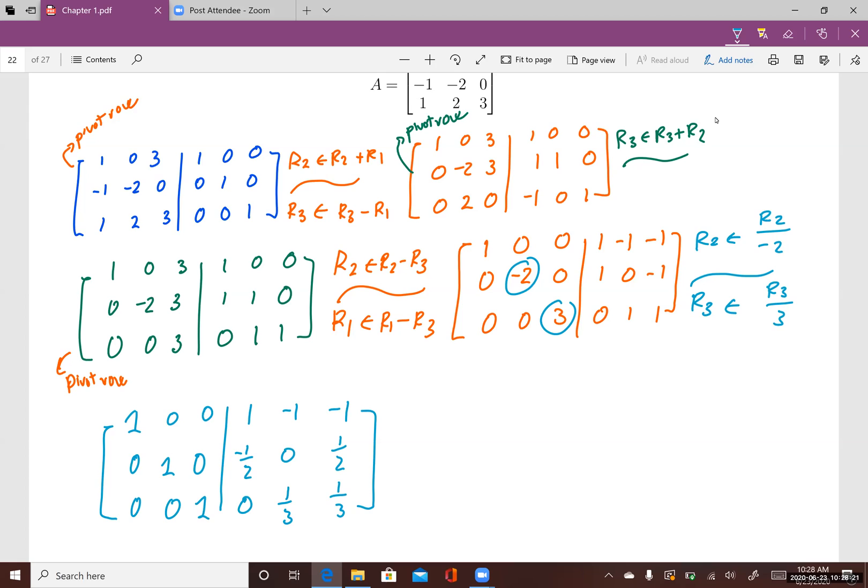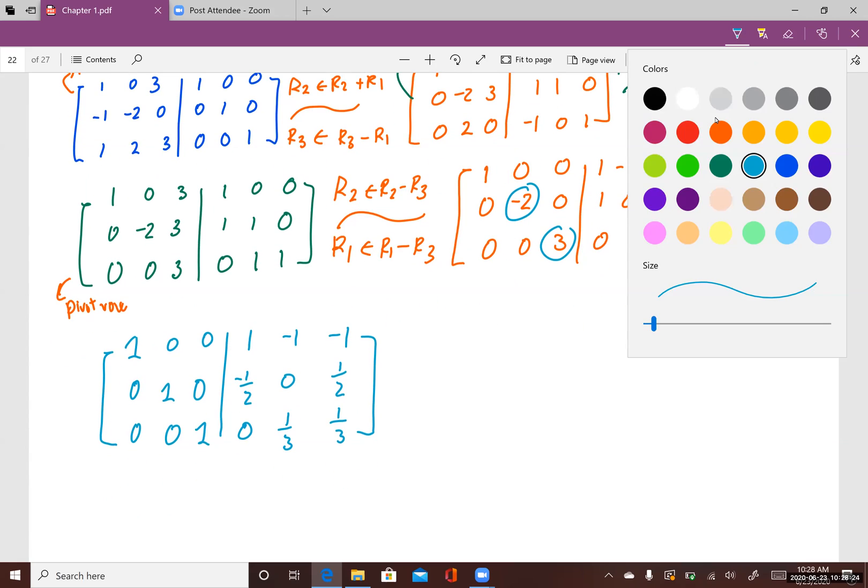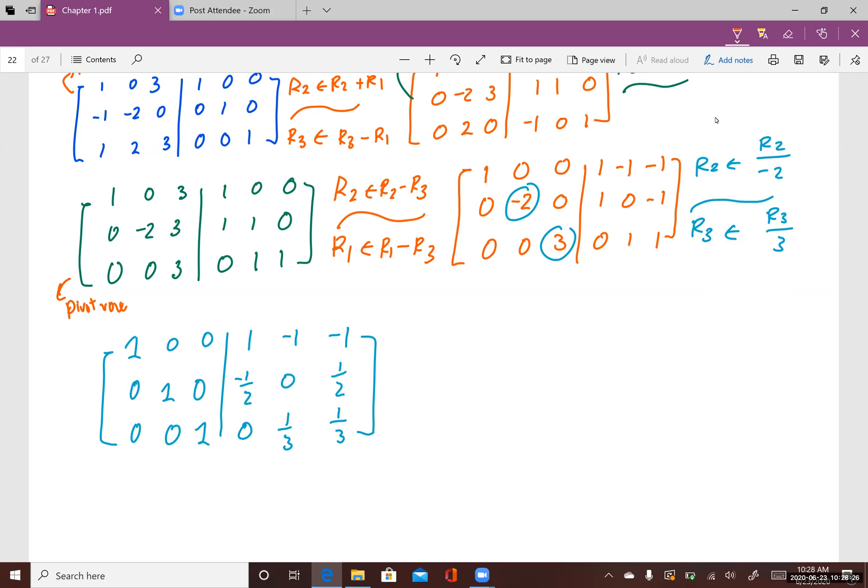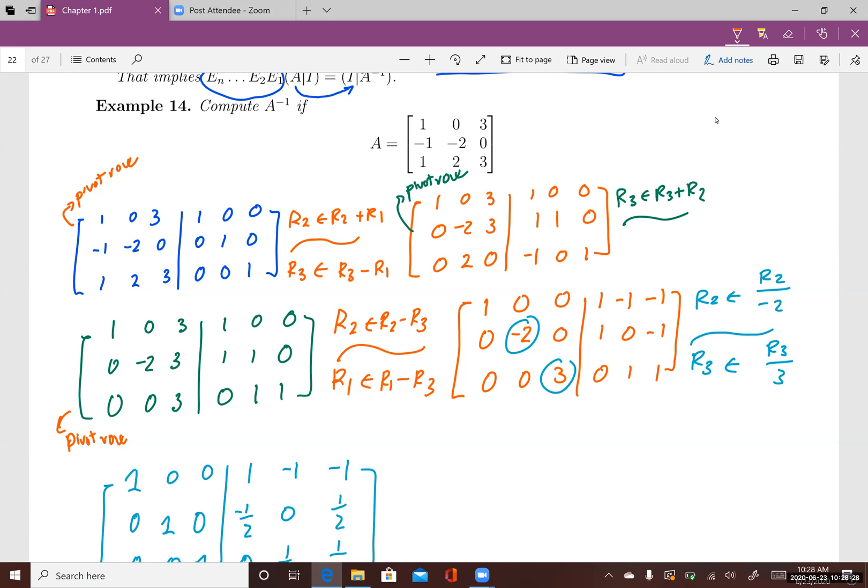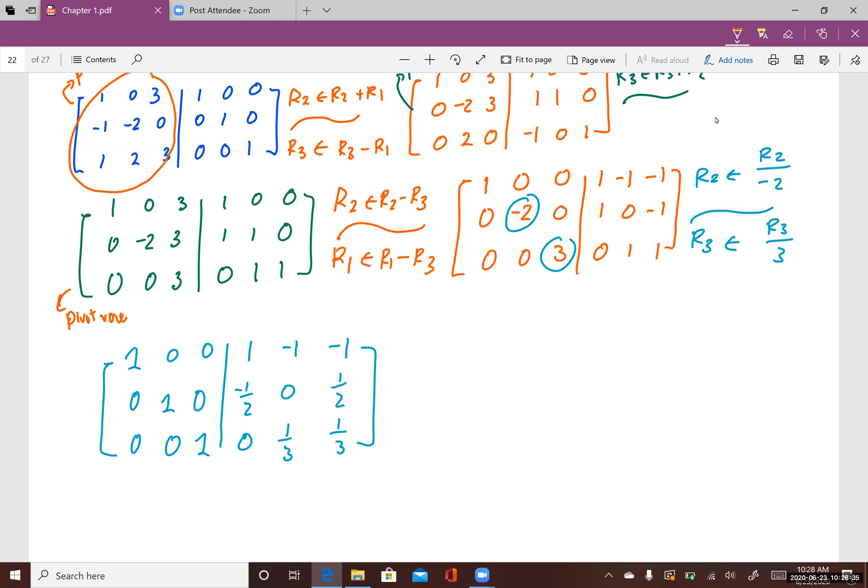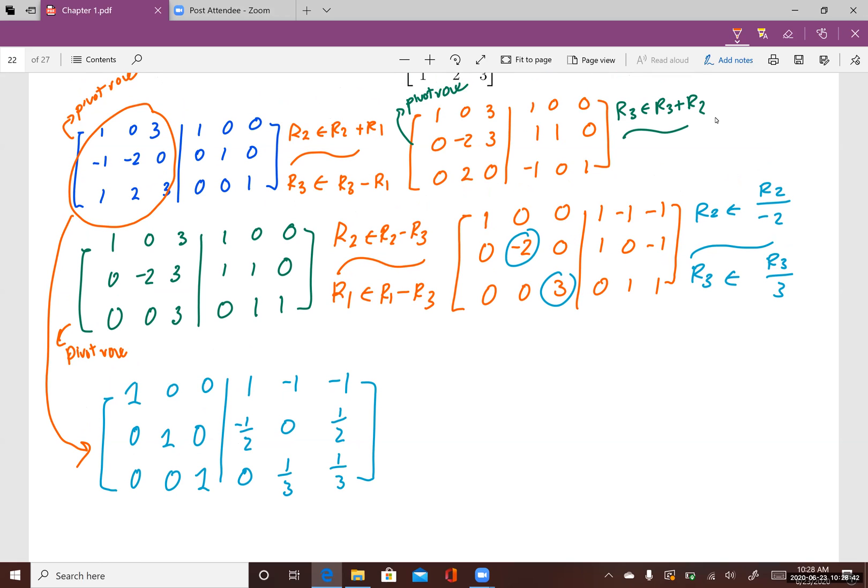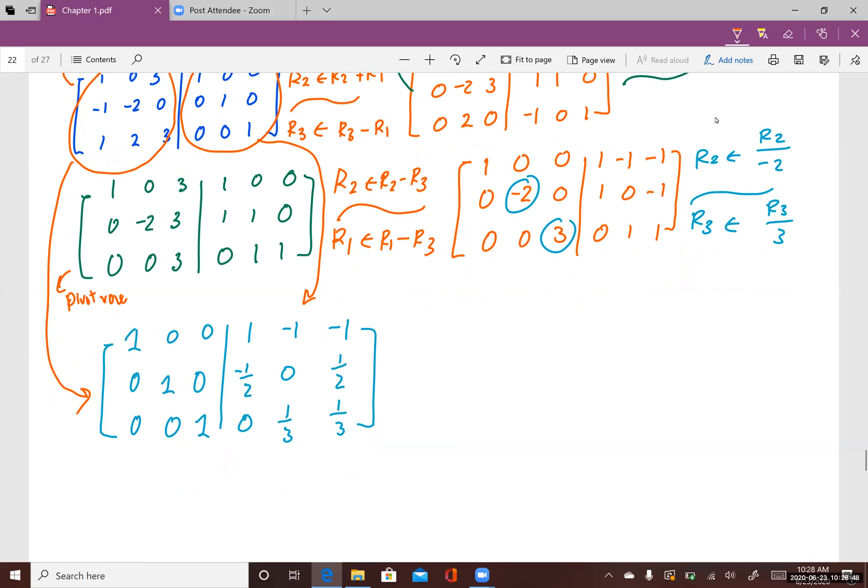At this point, you see that I used a bunch of row operations to transform A to I. This is I, identity matrix. And the same row operations that helped me transform I to my inverse matrix A. So this is A inverse.